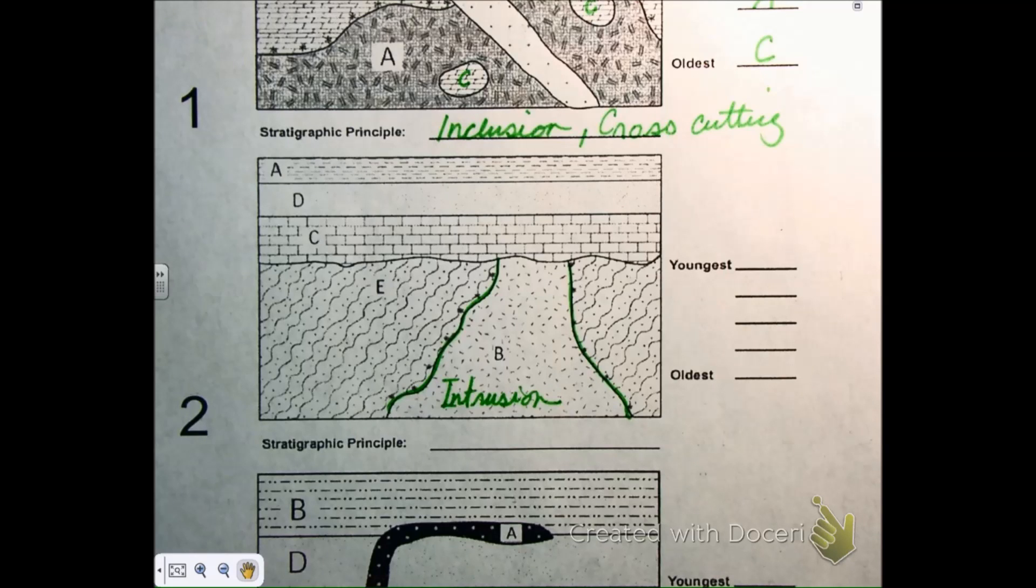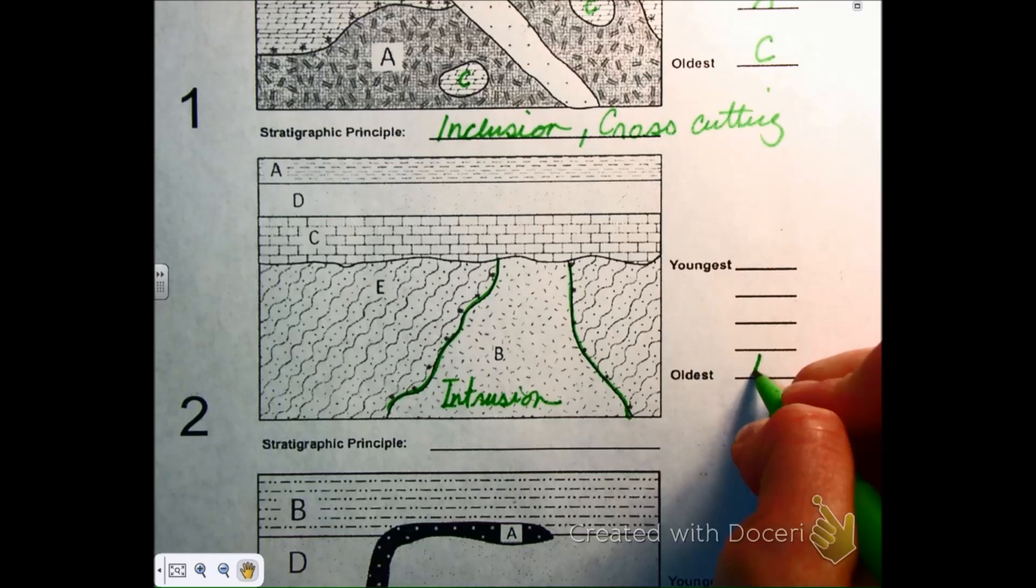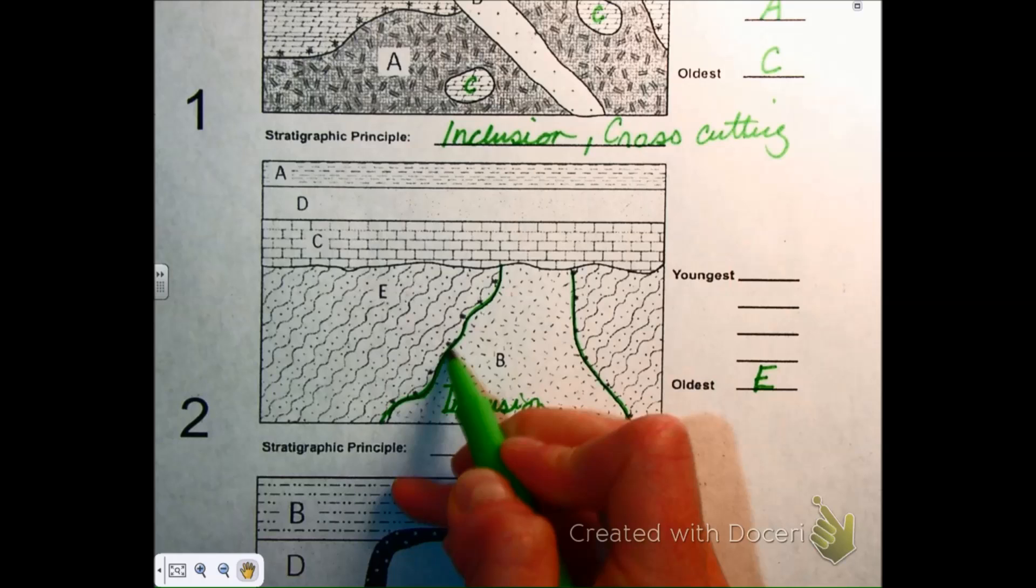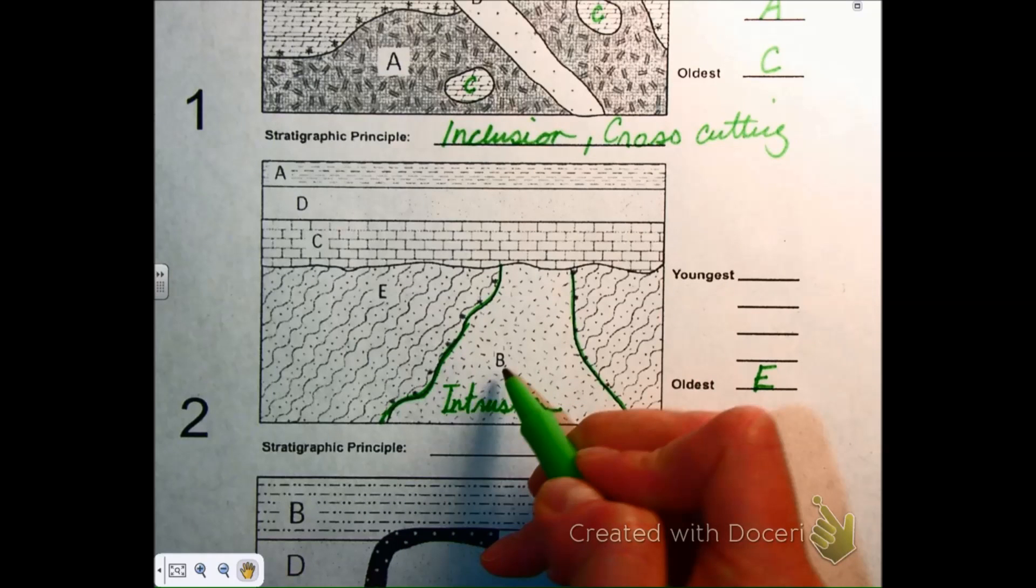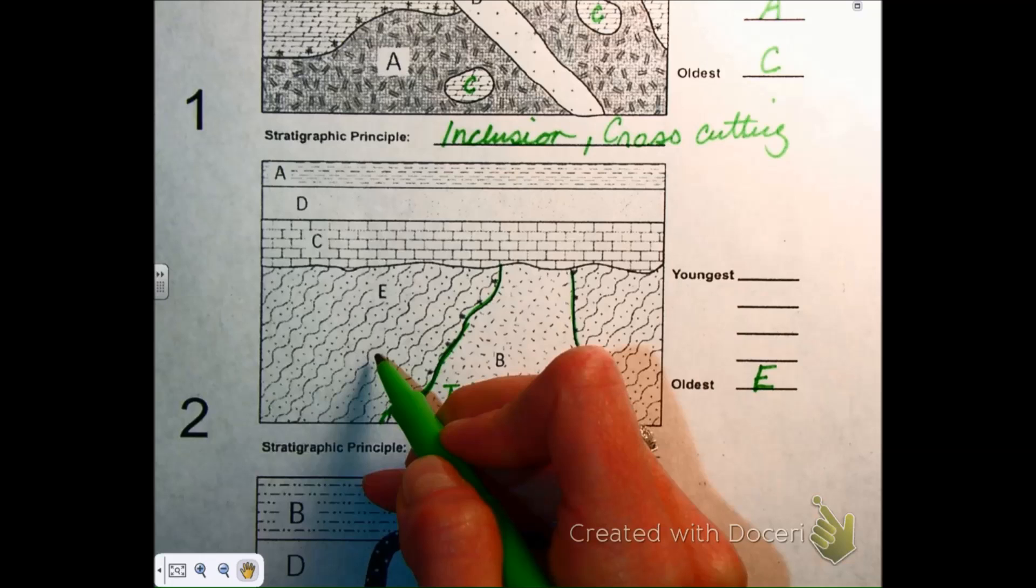Okay, because B is an intrusion that intrudes into E, therefore making it younger than E. Is that what you said? Okay, B and E sounded alike from over here. Good. So E is the oldest, and he said, just to clarify, B is an intrusion into E. And intrusions, based on the cross-cutting law, are younger than what they intrude through or cut through. So E is the youngest, then what would be next?